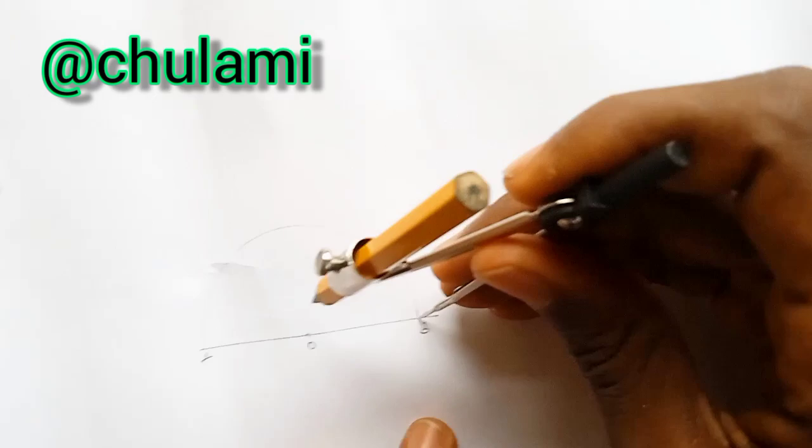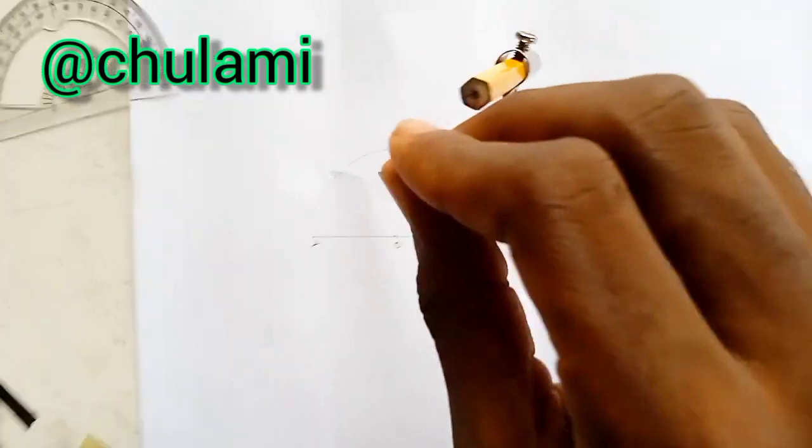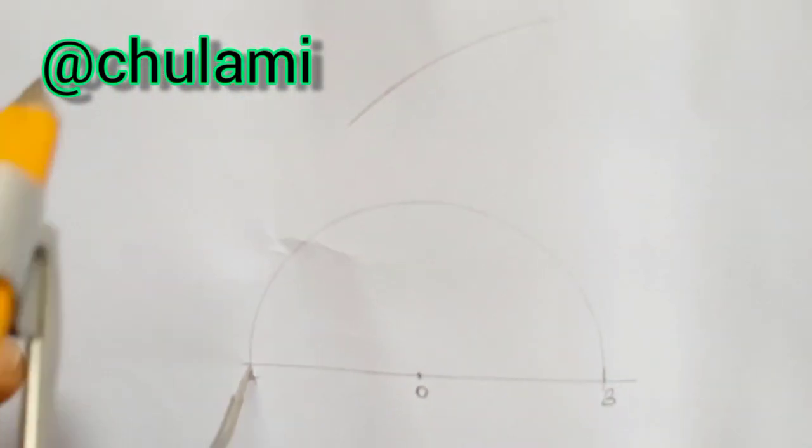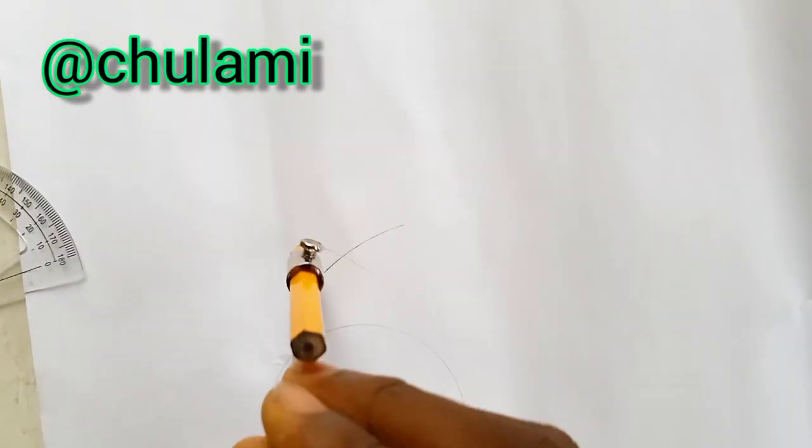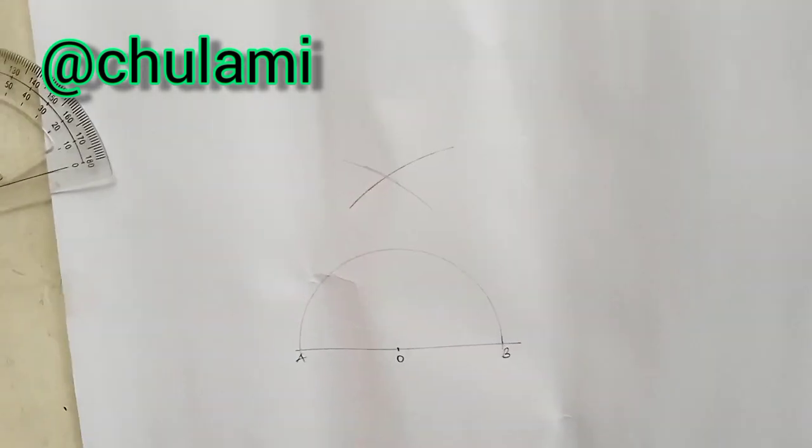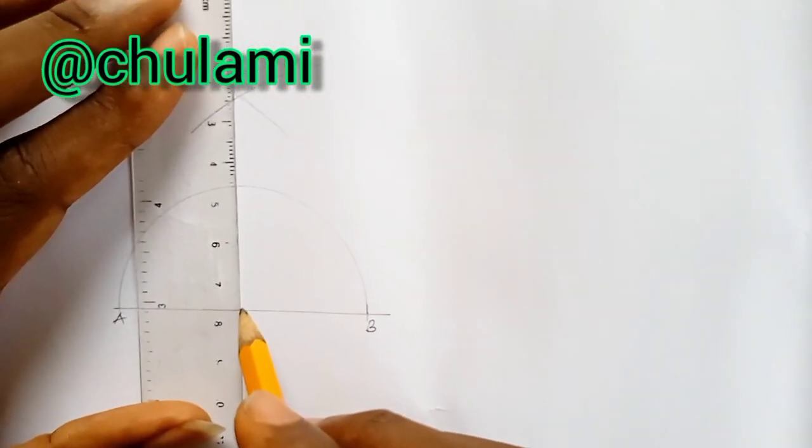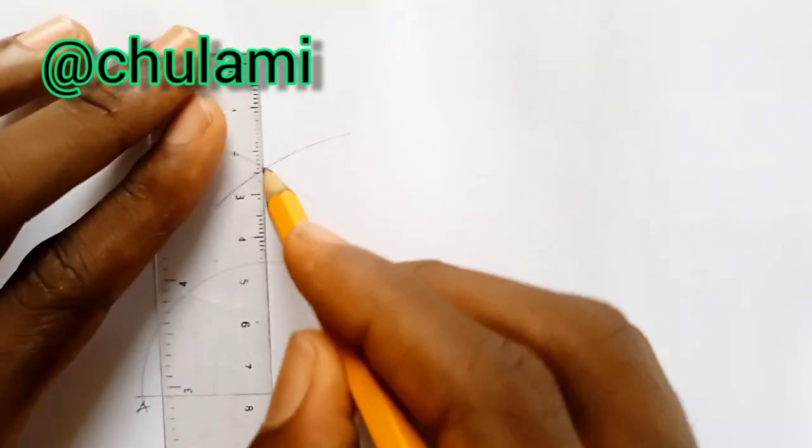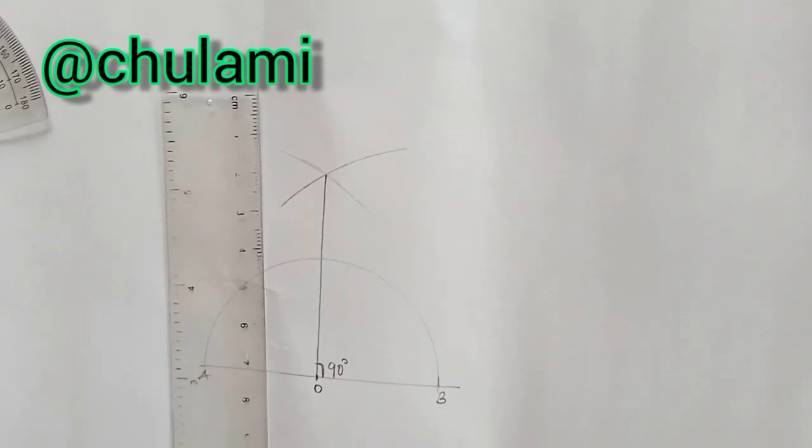Now pivot at B, elongate to A, then you do an arc. Pivot at A with that same radius, then you join the arc. When you're done with your meter rule, you join point zero to where they intersect. This will be your angle 90 degree.